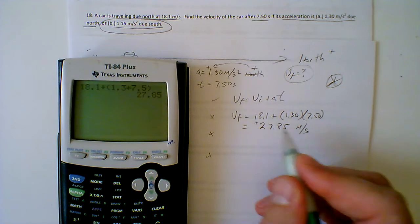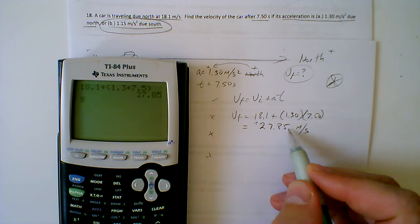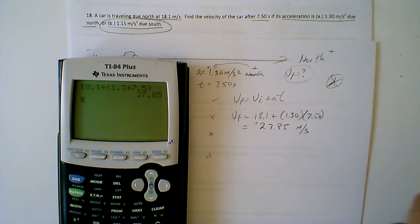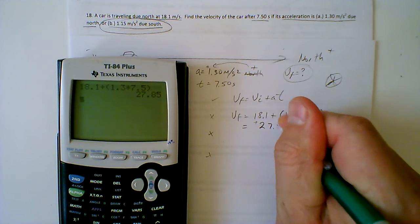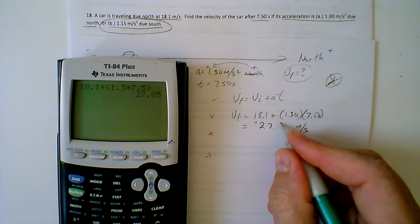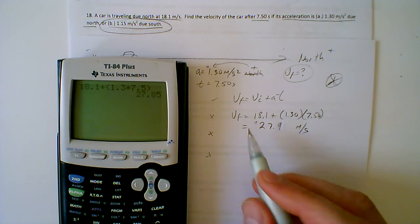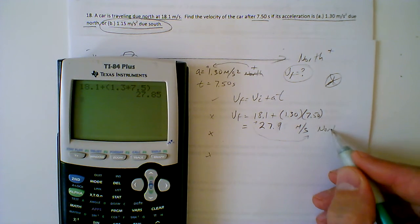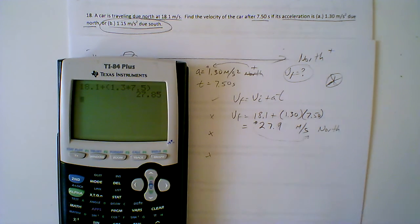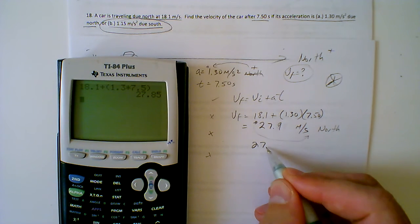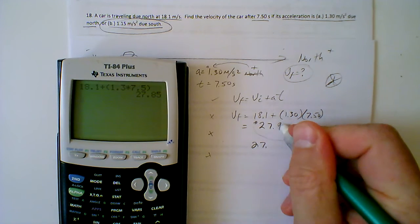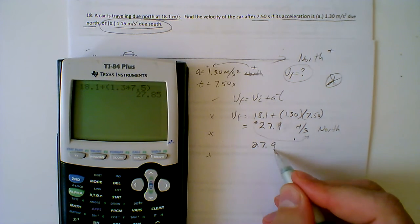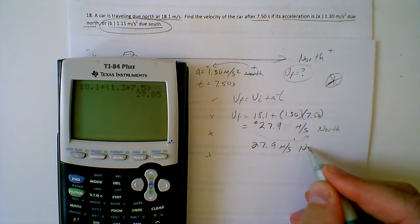One thing you have to note here is this is a positive 27.85 meters per second. Since this is a vector, you can round that to 27.9, and that positive is going to represent north. Once I write down north I'm no longer concerned with that, so our final answer is 27.9 meters per second north.